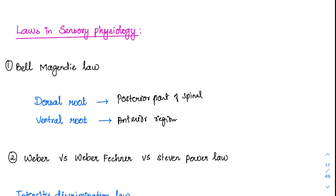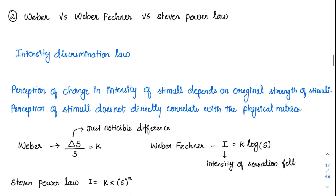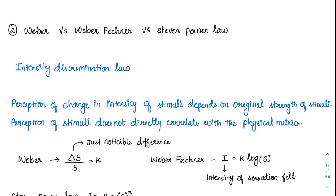There is another group of laws called Weber's law. The next improved version is the Weber-Fechner law, and finally Stevens' power law. All three people worked in the same field and proposed three different laws. All of them are valid but some are not applicable for all conditions. All of them proposed laws about intensity discrimination.